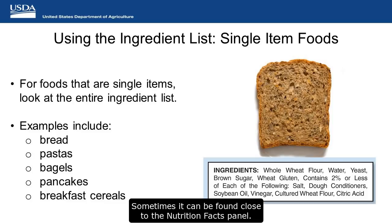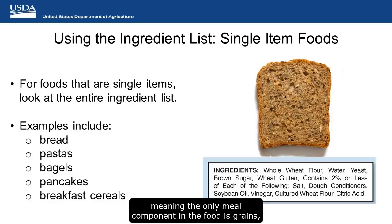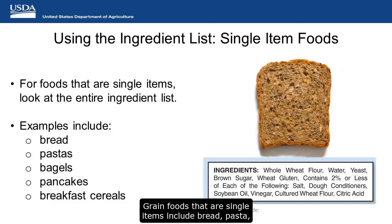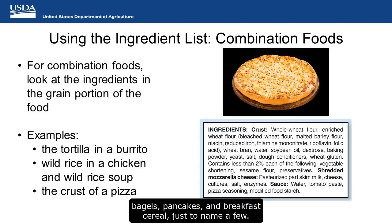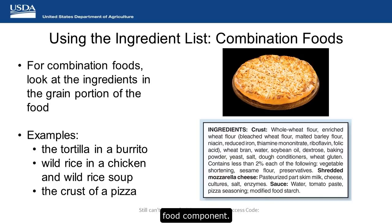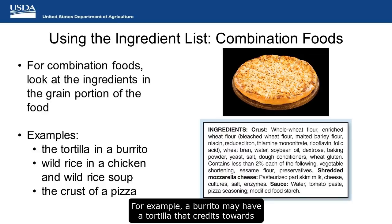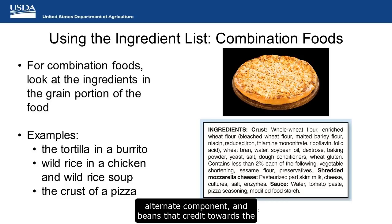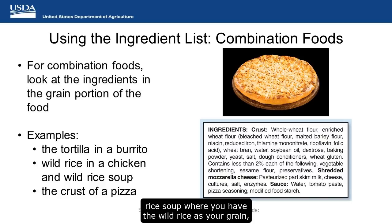To use the rule of three, first find your ingredient list on the bag, box, or other packaging of the grain food — sometimes it can be found close to the nutrition facts panel. For grain foods that are single items, meaning the only meal component in the food is grains, you will want to look at the entire ingredient list. Grain foods that are single items include bread, pasta, bagels, pancakes, and breakfast cereal, just to name a few. Combination foods are foods that have more than one food component. For example, a burrito may have a tortilla crediting towards the grain component, cheese towards the meat alternate, and beans towards the vegetable component.